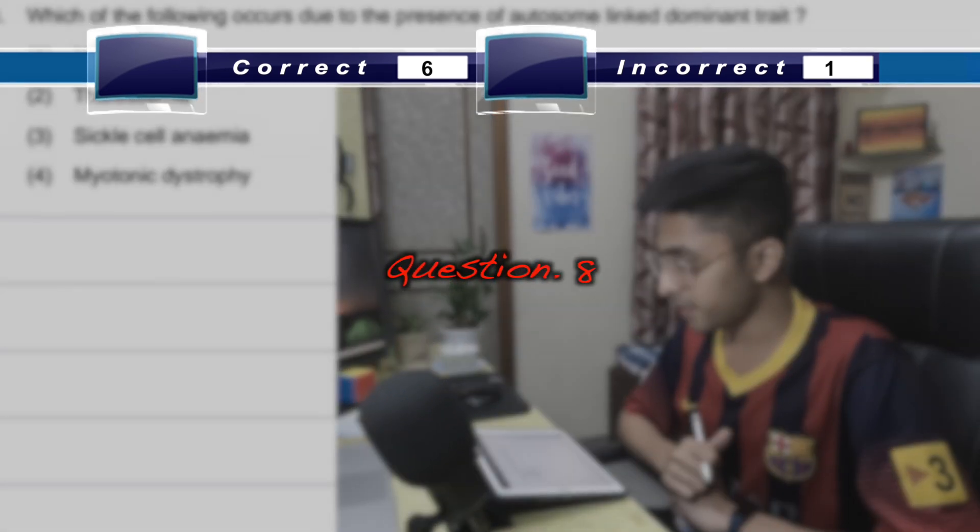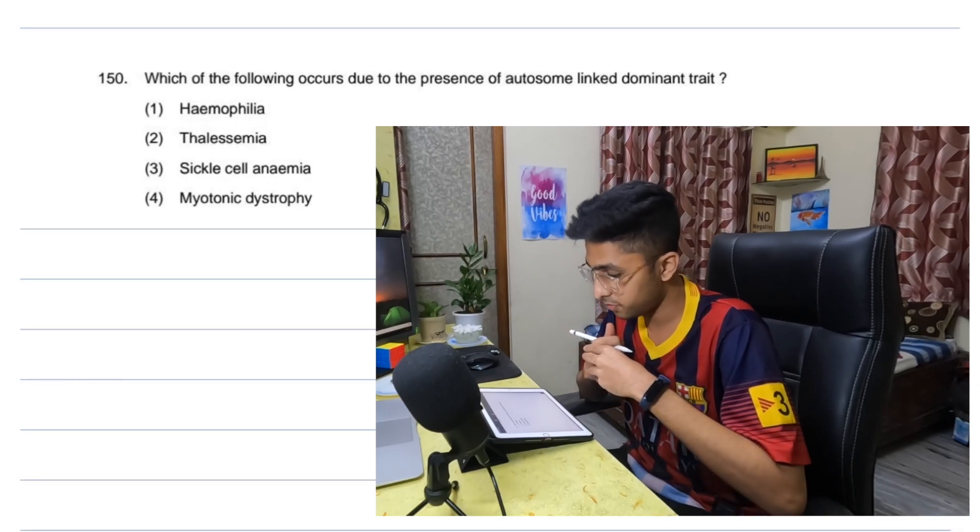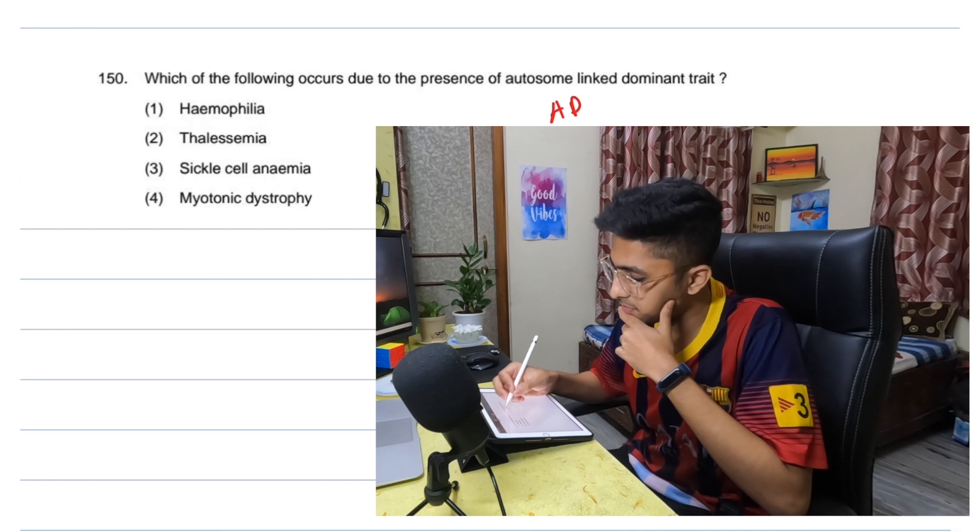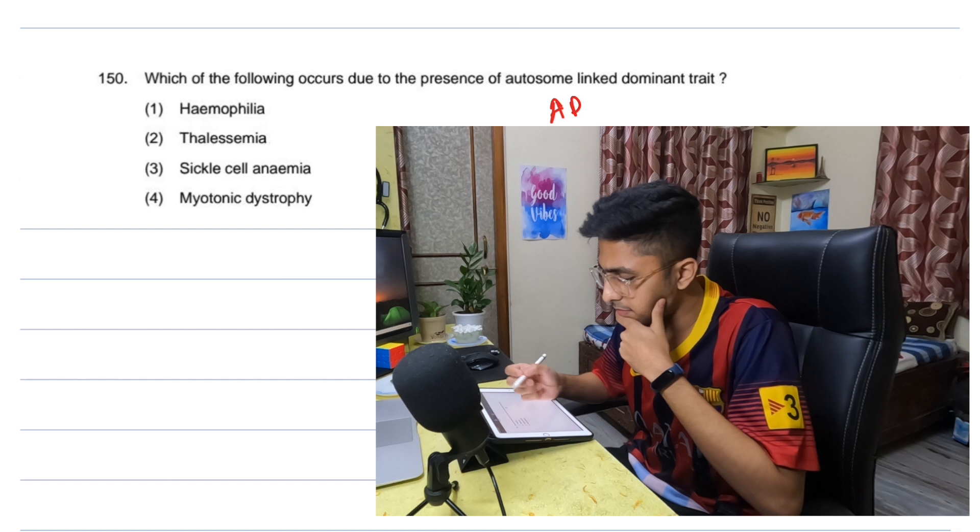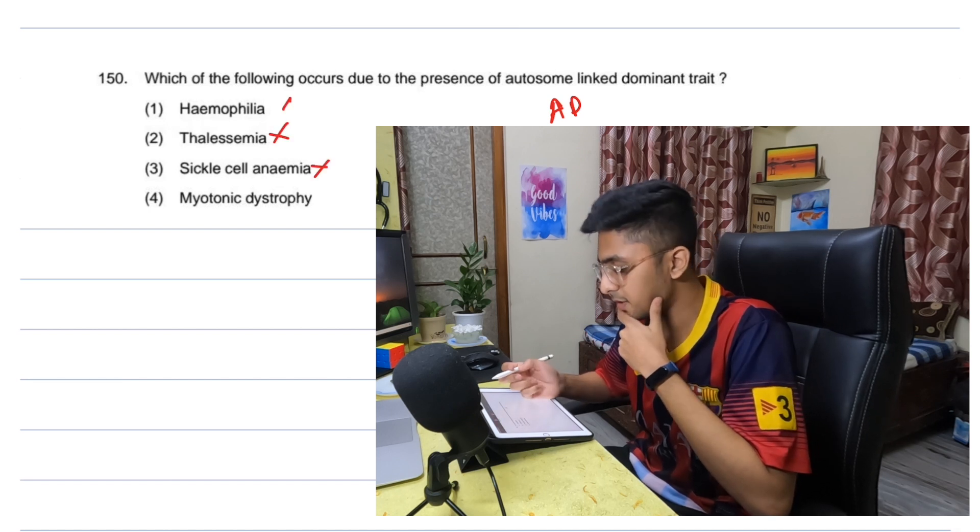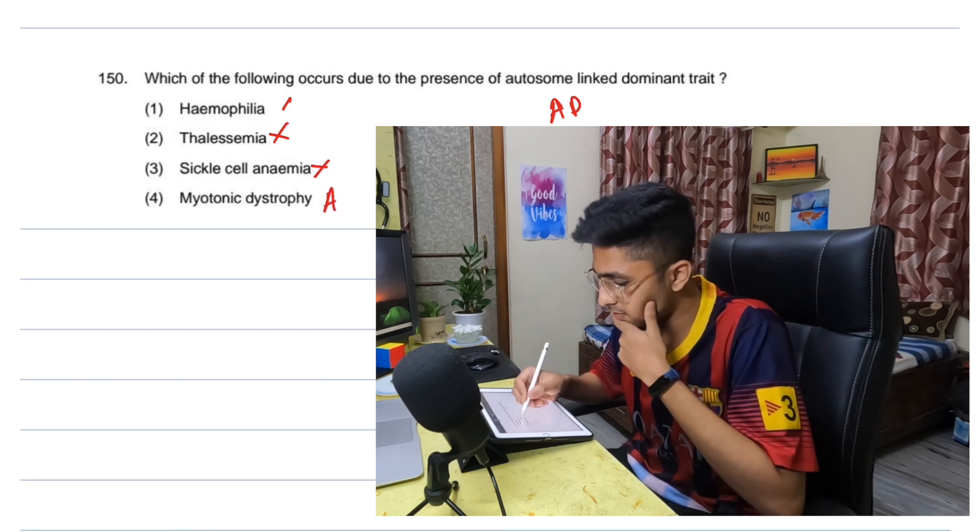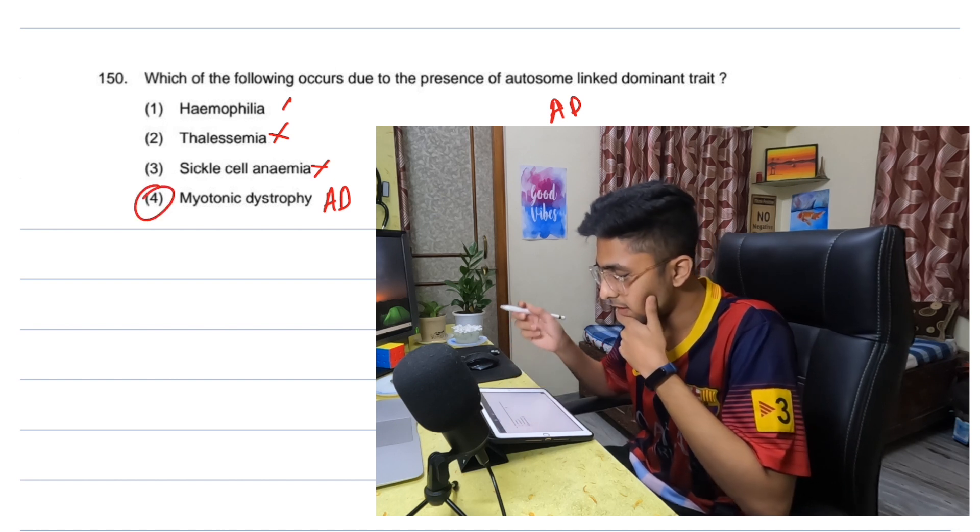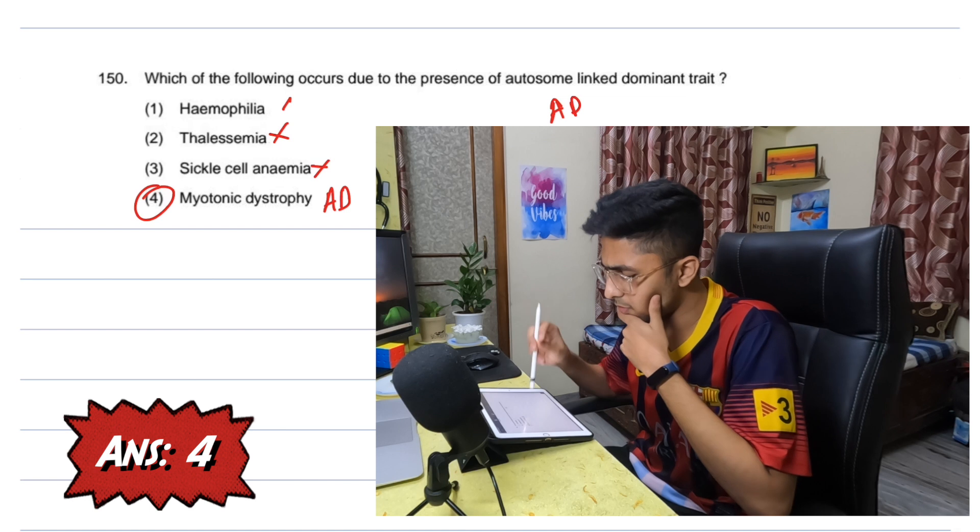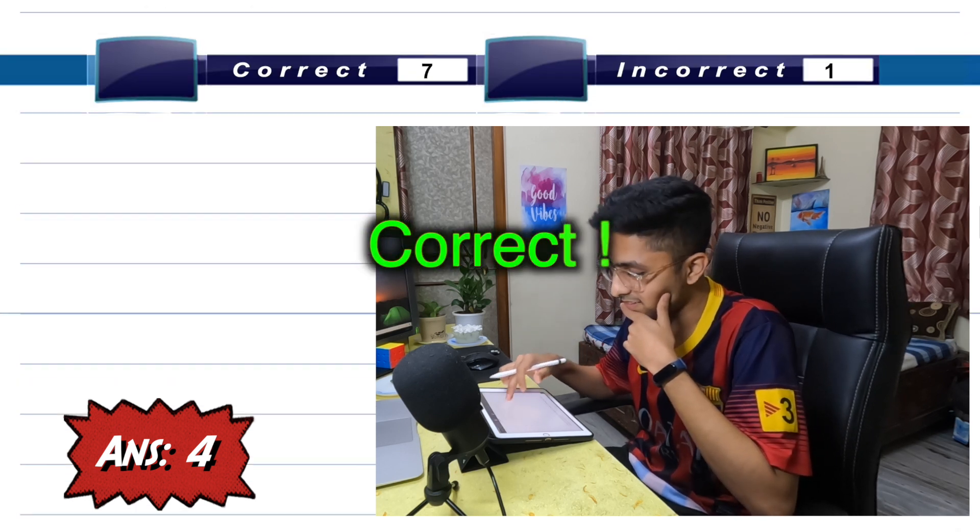Which of the following occurs due to the presence of autosome linked dominant trait? Autosomal dominant. Which one is autosomal dominant? Hemophilia - no. Thalassemia, sickle cell is definitely not. Thalassemia is not. Myotonic dystrophy is autosomal dominant. We still study that in med school. Hemophilia is not dominant but I'm not sure which one it was.